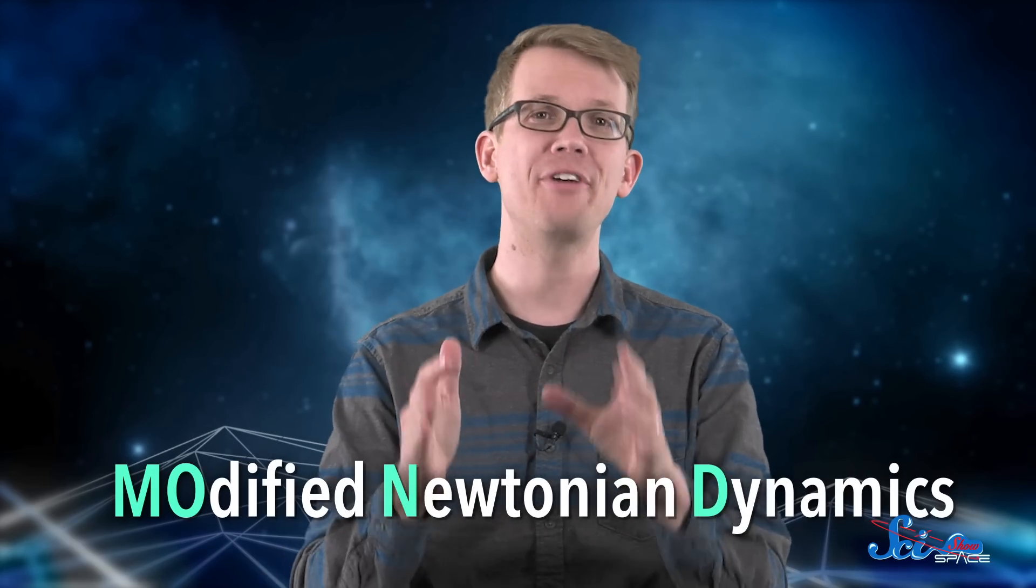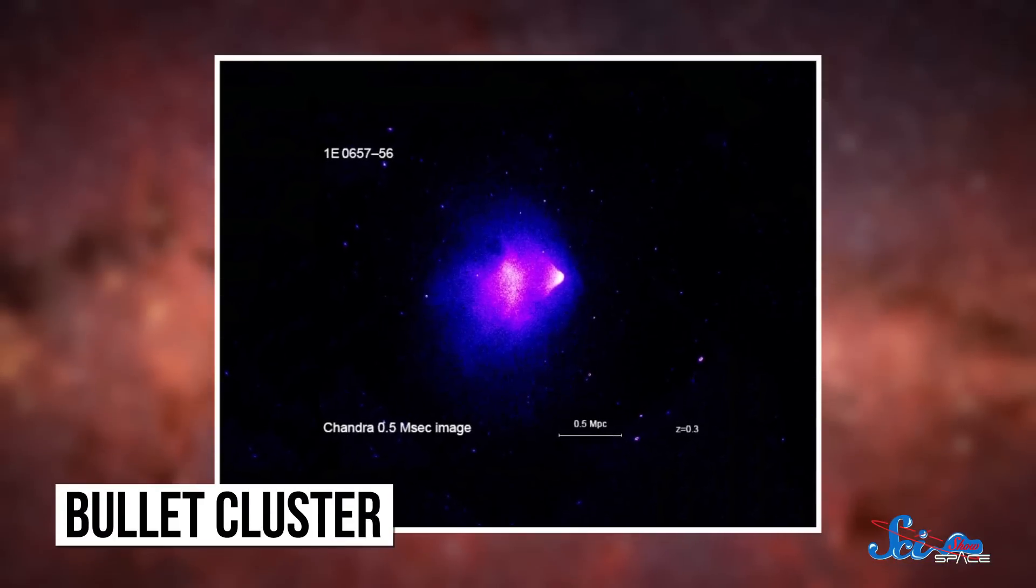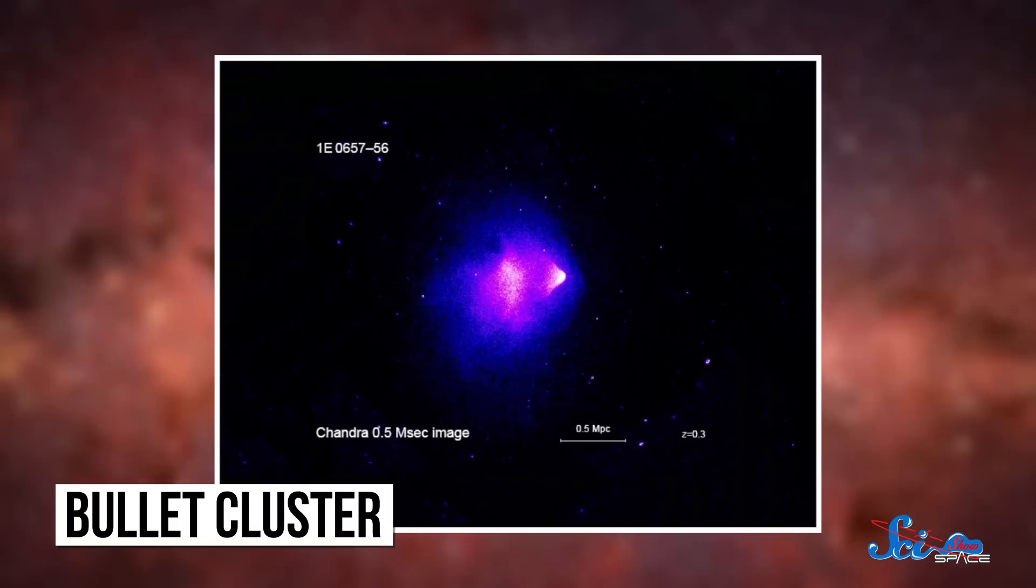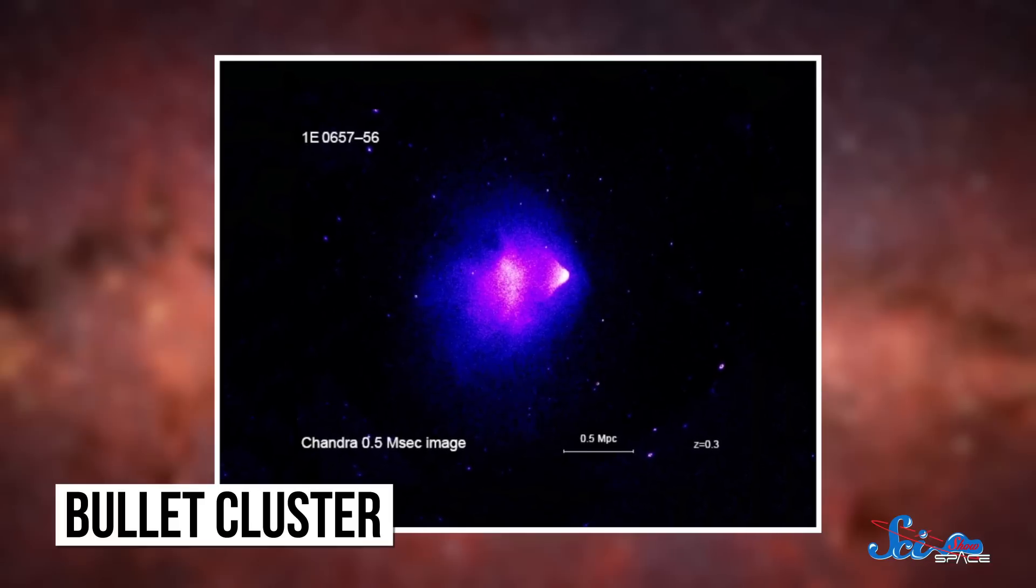There are some scientists still trying to subtly tweak the math we use to describe gravity so it fits all these observations without assuming that there's a bunch of invisible matter out there. They work on what's called MOND, Modified Newtonian Dynamics. They've been able to use their reworked laws of physics to explain some of the things that seem like evidence for dark matter. But objects like the Bullet Cluster, a pair of colliding clusters of galaxies where there seems to be dark matter completely separated from regular matter, really took the wind out of MOND's sails, at least for now.